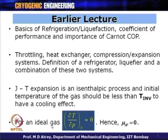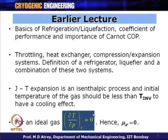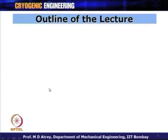We also saw that for an ideal gas, mu_JT — that is del T by del P at constant enthalpy — is equal to zero. This means if the ideal gas is subjected to isenthalpic expansion, it should not result in any lowering or even heating of the gas, because mu_JT equals zero for an ideal gas.